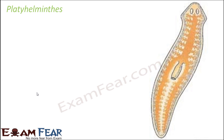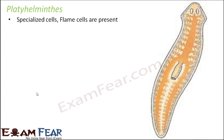Let us first talk about the phylum Platyhelminthes — the group of flatworms. These flatworms have specialized cells called flame cells which are used as excretory organs, and they are especially present for the purpose of excretion.